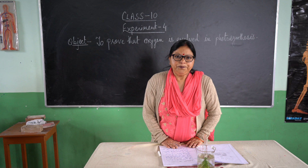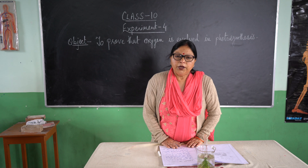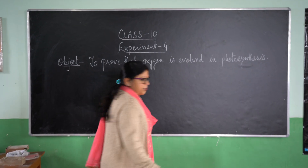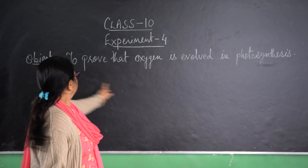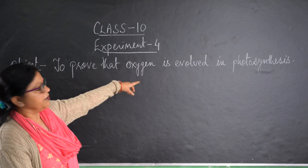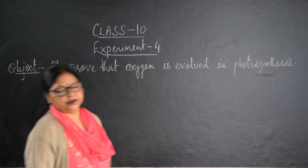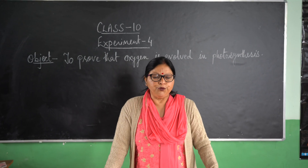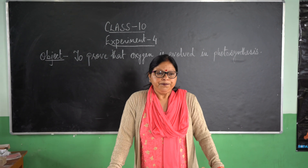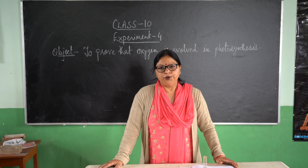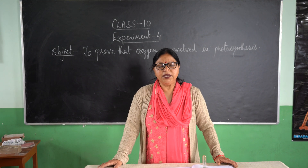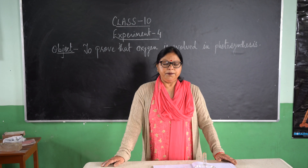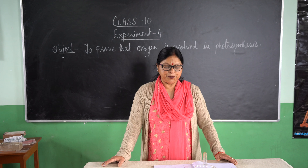Hello Class 10. I'm explaining experiment number four. The object of the experiment is to prove that oxygen is evolved in photosynthesis. You all know that during photosynthesis, when plants prepare their own food, oxygen gas is also evolved and released. We are going to demonstrate the same with the help of a simple experiment.